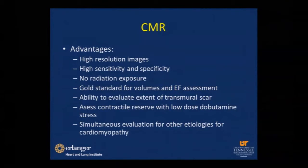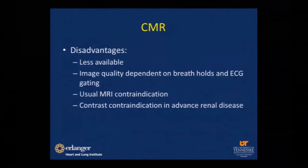Simultaneous evaluation of other etiologies for cardiomyopathy — mainly infiltrative cardiomyopathy — is also possible with CMR. Disadvantages include CMR not being readily available, image quality depends on breath holds and EKG gating, usual MRI contraindications include ferromagnetic metal in the patient's body, and contrast contraindication in patients with advanced renal disease.